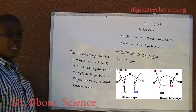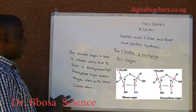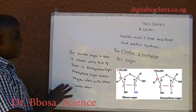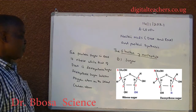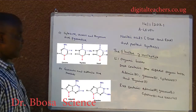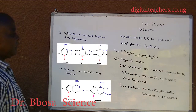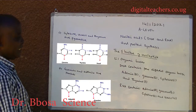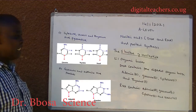The pentose sugar in RNA is ribose, while that of DNA is deoxyribose sugar. Deoxyribose sugar lacks an oxygen atom on the second carbon atom. Organic bases: DNA contains four organic bases — adenine, guanine, cytosine, and thymine.